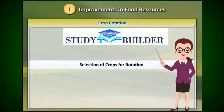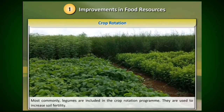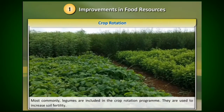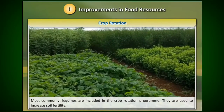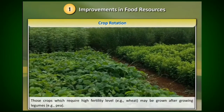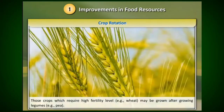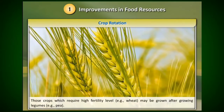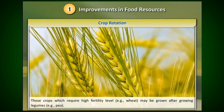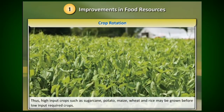Selection of crops for rotation. Most commonly, legumes are included in the crop rotation program. They are used to increase soil fertility. Crops which require a high fertility level, e.g. wheat, may be grown after growing legumes, e.g. pea.